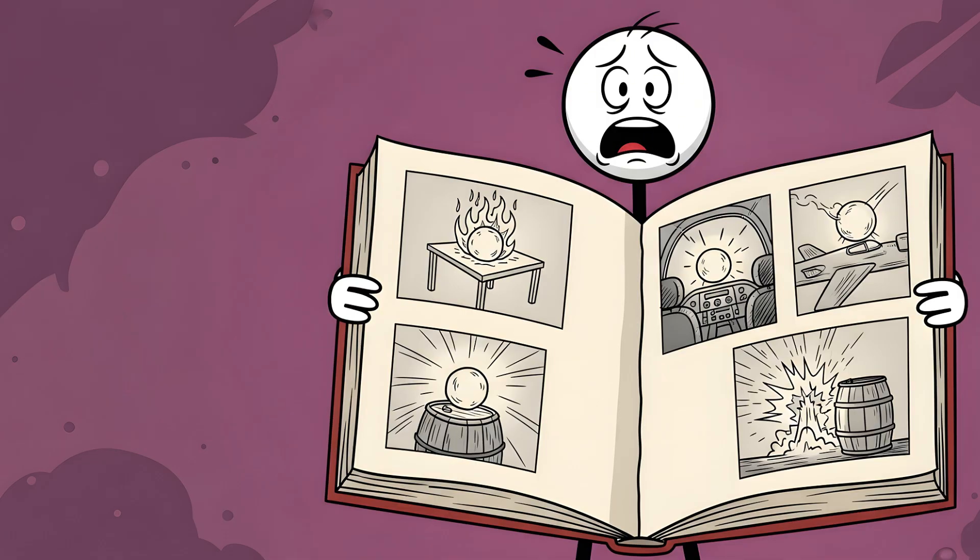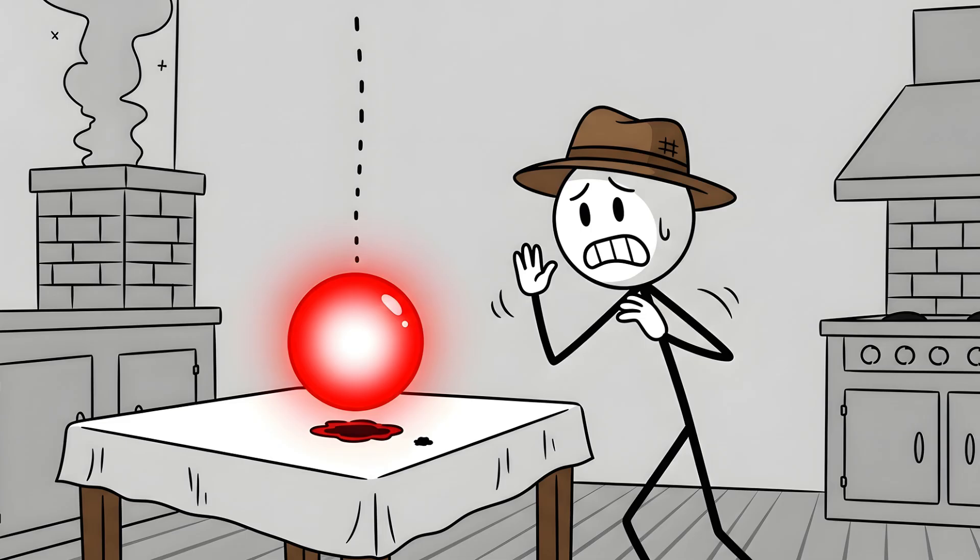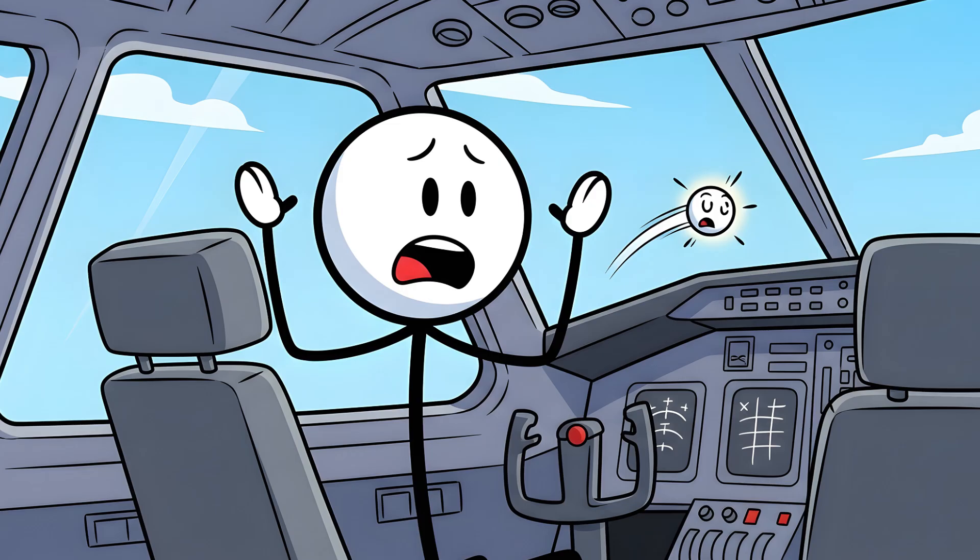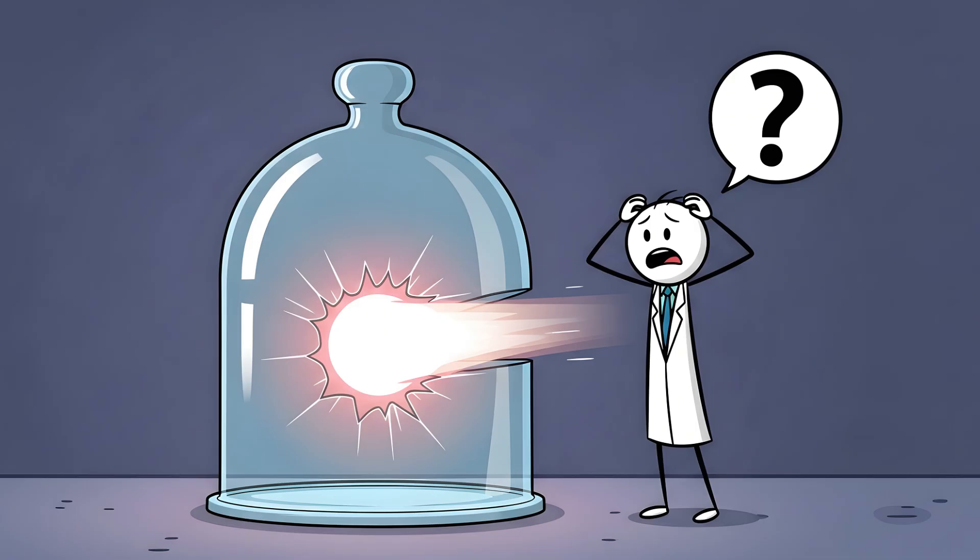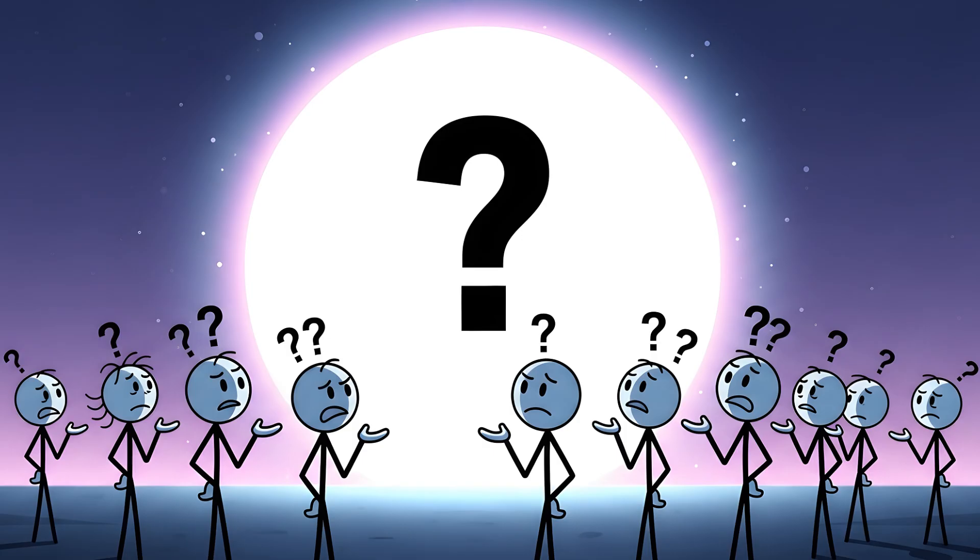Accounts are terrifyingly specific. A farmer in 1936 reported a red ball of fire floating into his kitchen, burning a hole in his tablecloth, and then disappearing up the chimney. Pilots have seen them zipping around the cockpits of their planes. One account describes a ball of lightning hovering over a water barrel, bringing the water to a boil before exploding. This isn't a simple trick of the light. This is a physical phenomenon that seems to defy the laws of physics. And the scariest part? We still don't really know what it is.